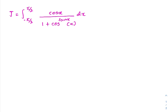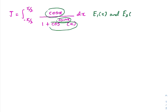If you think carefully, in the numerator we have cosine of x — an even function. And here we also have an even function. Tan of x is an odd function. So I'm going to generalize this integral. I'm going to define functions e1(x) and e2(x) as even functions, and o(x) as an odd function.